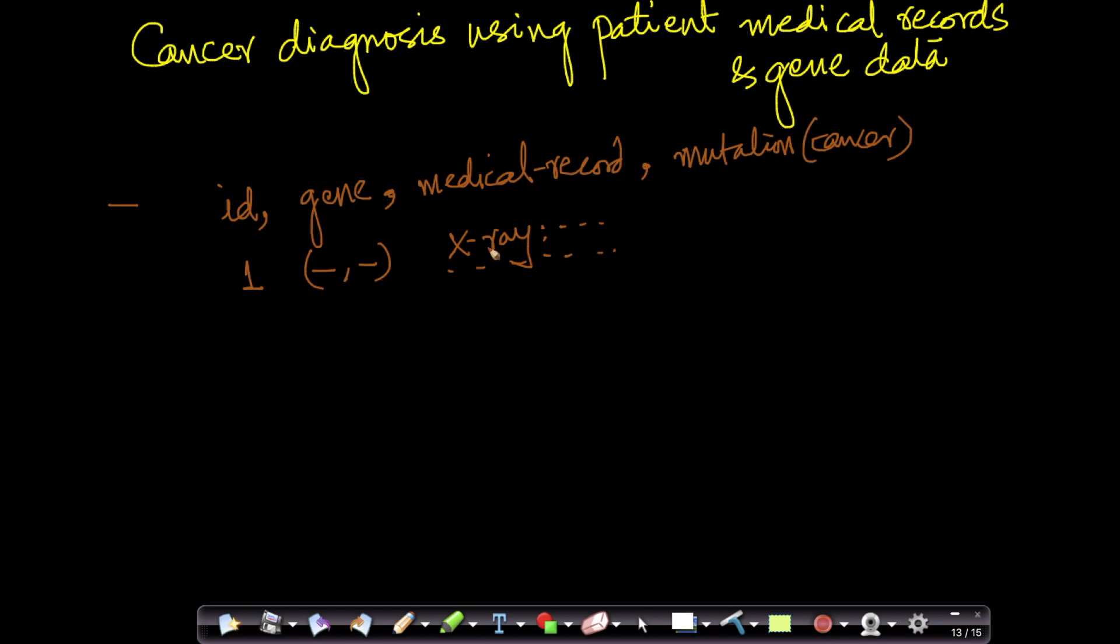Similarly, if there was a blood test done on this patient, you would have the actual transcript of the whole medical record. This is an enormous amount of text data and using all of this information we have to predict what type of cancer mutation the patient has.